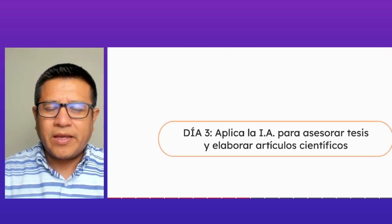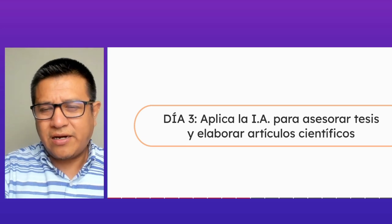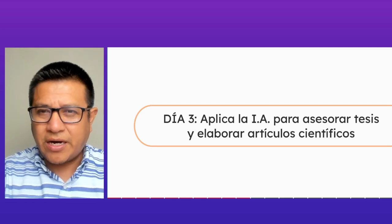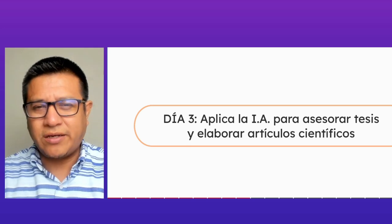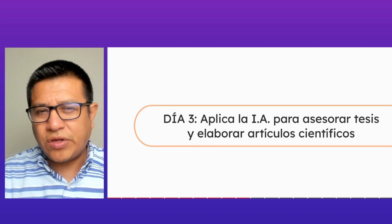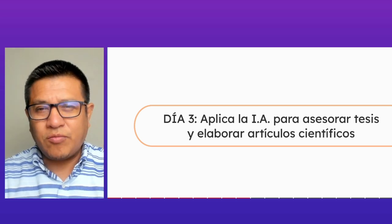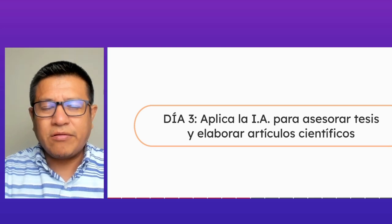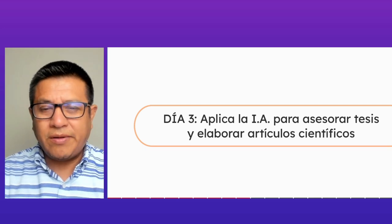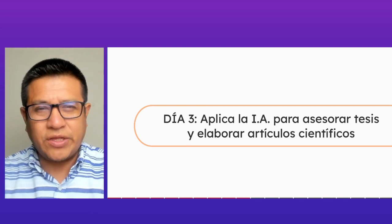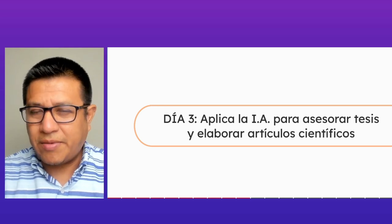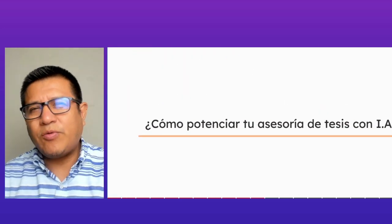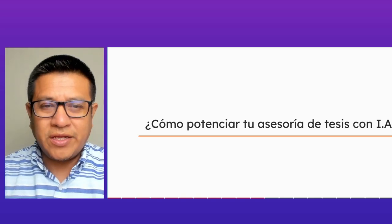Hoy en el tercer día vamos a conocer cómo la inteligencia artificial nos ayuda en dos procesos puntuales: como asesor de tesis, porque si asesoras tesis que sustentan ya sea en pregrado o posgrado, si estás pensando en ser docente Renacid, eso suma en el puntaje. Por una tesis de pregrado sustentada suma 0.5 por cada tesis; a nivel de maestría suma un punto. ¿Cómo podemos optimizar nuestras actividades en el proceso de asesoría y acompañamiento con los estudiantes? Muchas veces el estudiante llega a la asesoría sin las bases para hacer la investigación y nos toca empezar desde cero, lo cual multiplicado por 10 o 20 estudiantes se hace complicado.